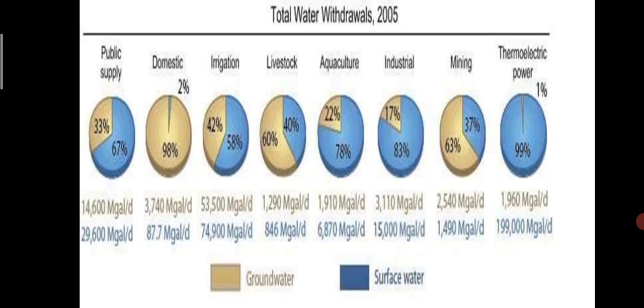Let's see total water withdrawal in 2005 — that is the usage or consumption of water by humans. Public supply: 67% groundwater and 33% surface. Domestic use: 2% of 98% water. Irrigation: 42% groundwater, 58% surface. Aquaculture or livestock: 60%. Industrial: 22%. Mining: 17%. Thermoelectric plants: 63% — and 1%. That is how water is used by humans.